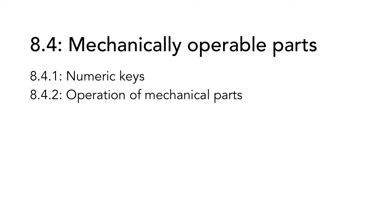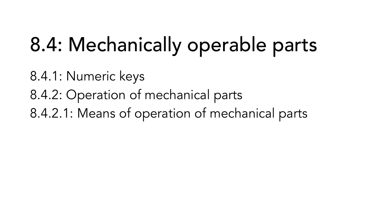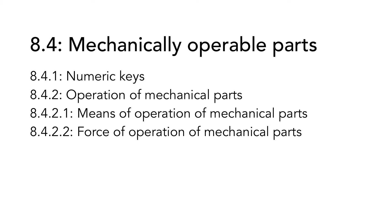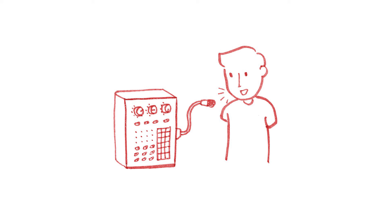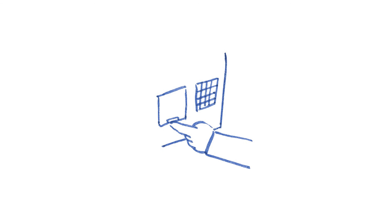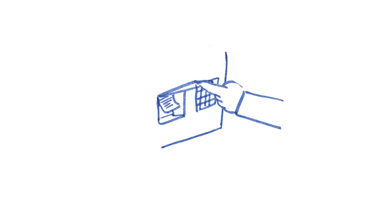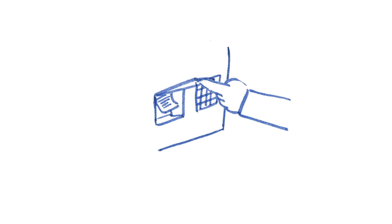The next heading has to do with operation of mechanical parts, divided into means of operation and force of operation. If the user needs to grasp, pinch, or twist something to operate the ICT hardware, there needs to be an alternative way of doing this, since not all users will be able to perform the needed movement. Speech input could be one example of meeting this requirement. The second requirement has to do with force of operation of mechanical parts. If the user needs to use a certain force to operate the ICT hardware, an alternative that requires less force must be provided. The specific requirement in the standard is comparable to a pressure of approximately 2 kg.